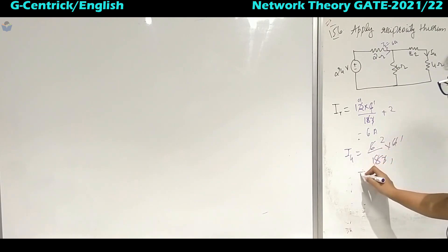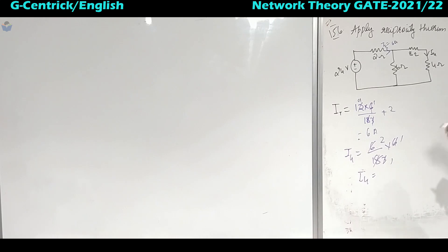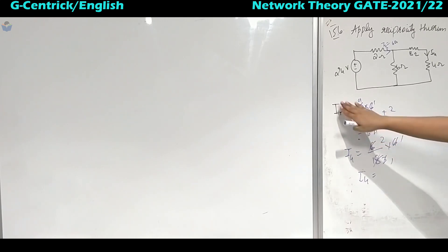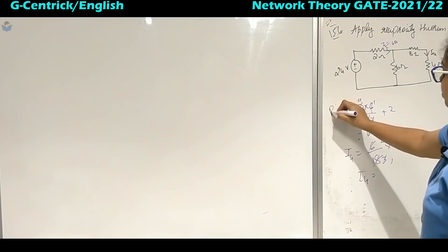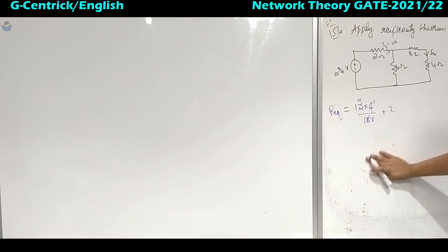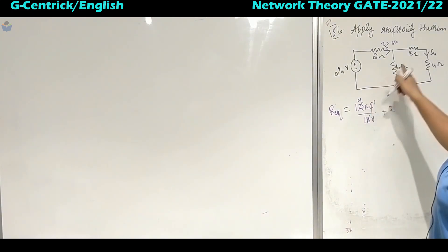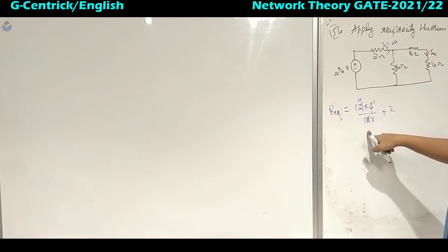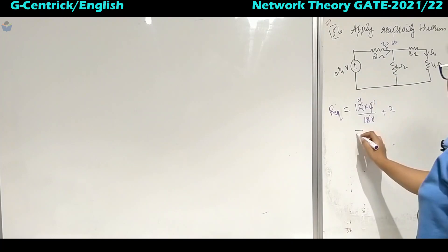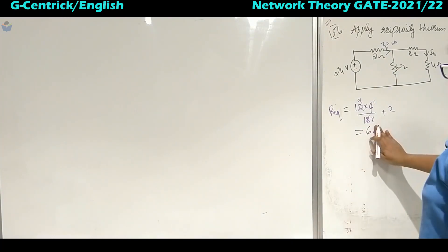So R equivalent is 12 into 6 divided by 18, giving 4, plus 2 in series — total equivalent resistance is 6 ohms. Current I total will be 24 by 6, which is 4 amperes.